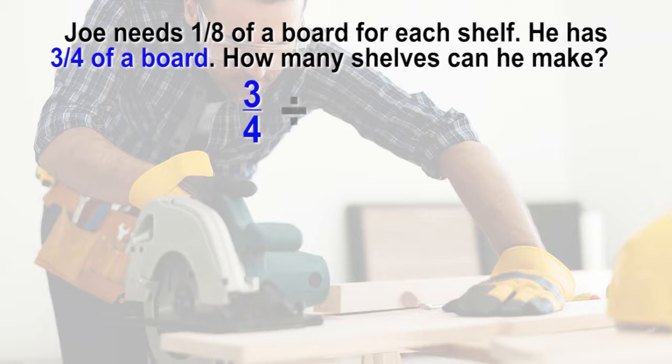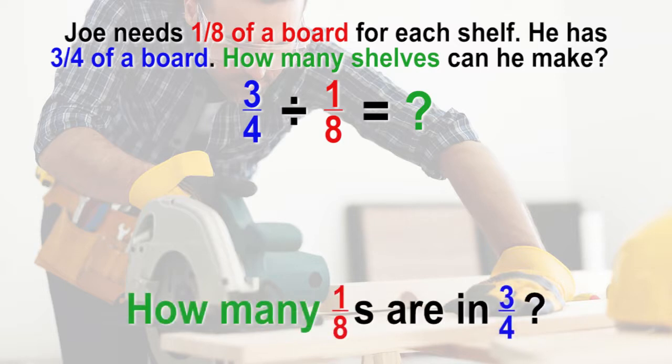We want to divide it into eight sections so that each section is 1/8 of a board. So 1/8 is the divisor. We will be looking for the quotient, which is how many shelves he can make. We know how much is in a group and we need to find out how many groups we will have. The question will be, how many one-eighths are in three-fourths?